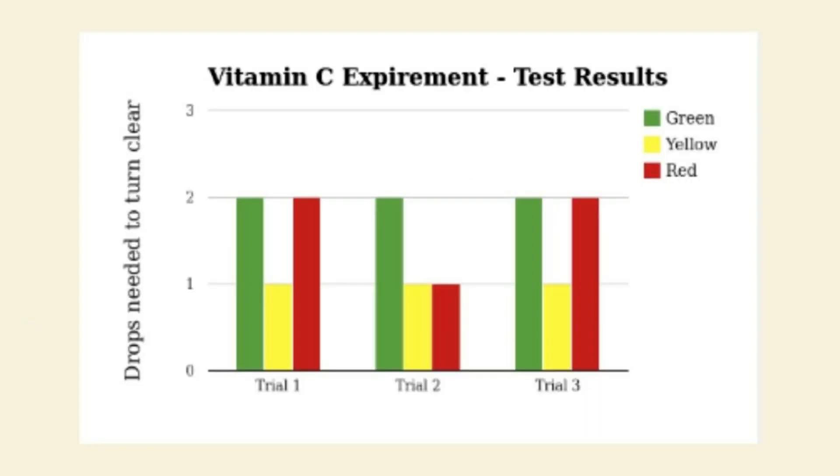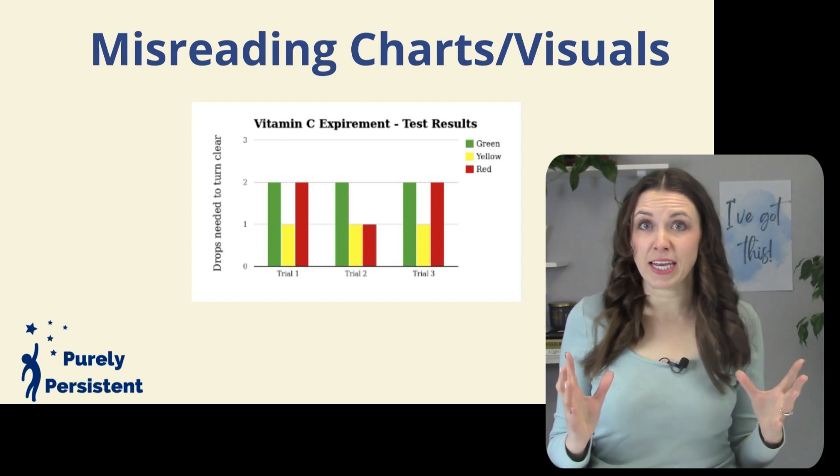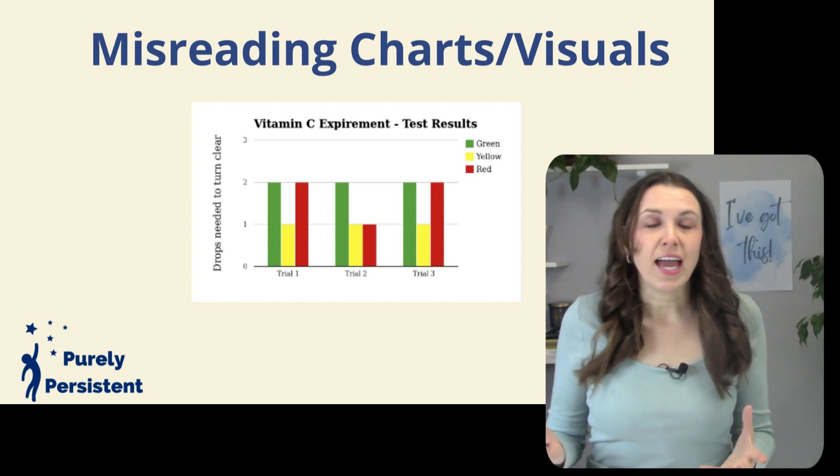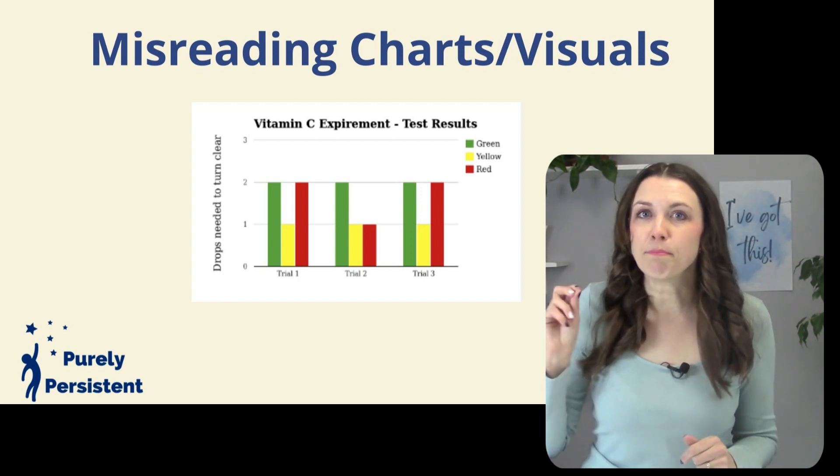Let's take a closer look at this one. So it says vitamin C experiment test results. And if you look on the left, it says drops needed to turn clear. So maybe it's some sort of liquid, something like that. And we have here zero, one, two, three drops. And then down on the bottom it says trial one, trial two, and trial three. And we've got green, yellow, and red. Looks like the green is always going to be at two drops. And the yellow is always at one drop. But notice how the red goes from two to one, back to two. So take just a minute and really figure out what's going on in the graph. And then when it comes time for me to answer the questions, I'm much better prepared.